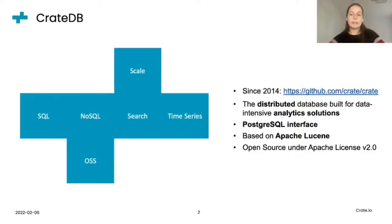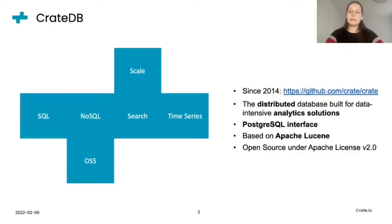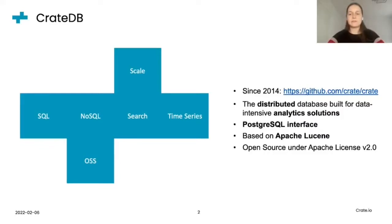Before I go into more details, let me first introduce CrateDB to you. CrateDB is a distributed database built for data-intensive analytics solutions. It has been there since 2014, and it's open source under Apache License 2.0. One of the main features of CrateDB is its compatibility with the Postgres interface. Also, its storage strategy is based on an Apache Lucene project, which offers scalable and high-performance indexing and very efficient search over documents.